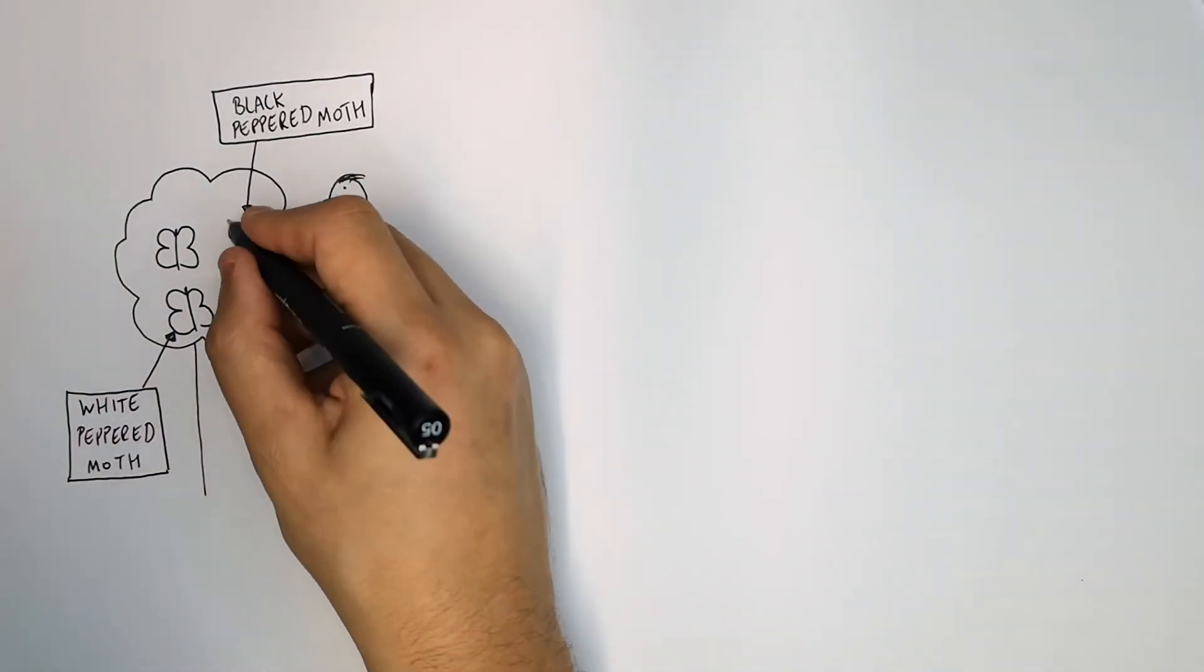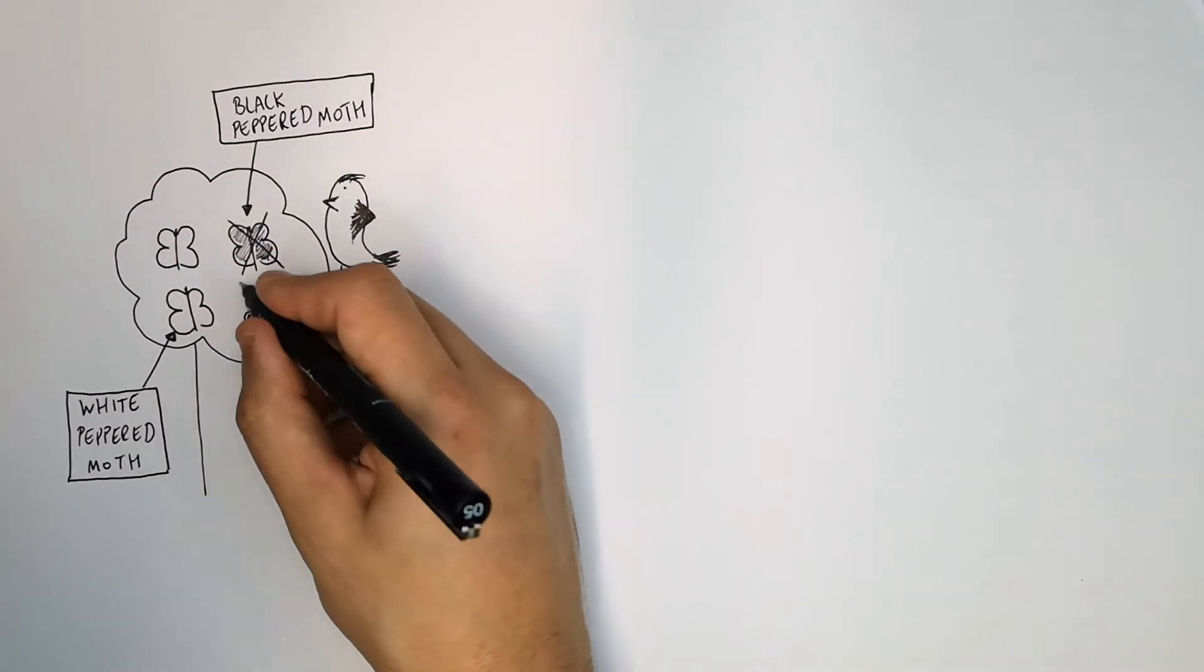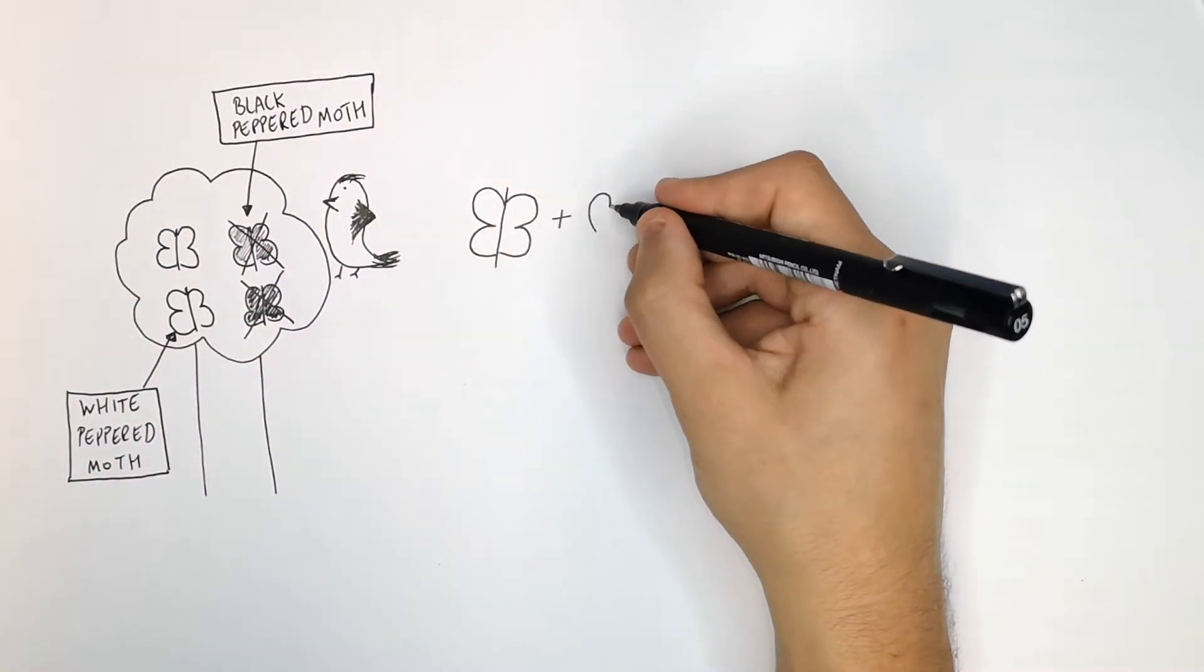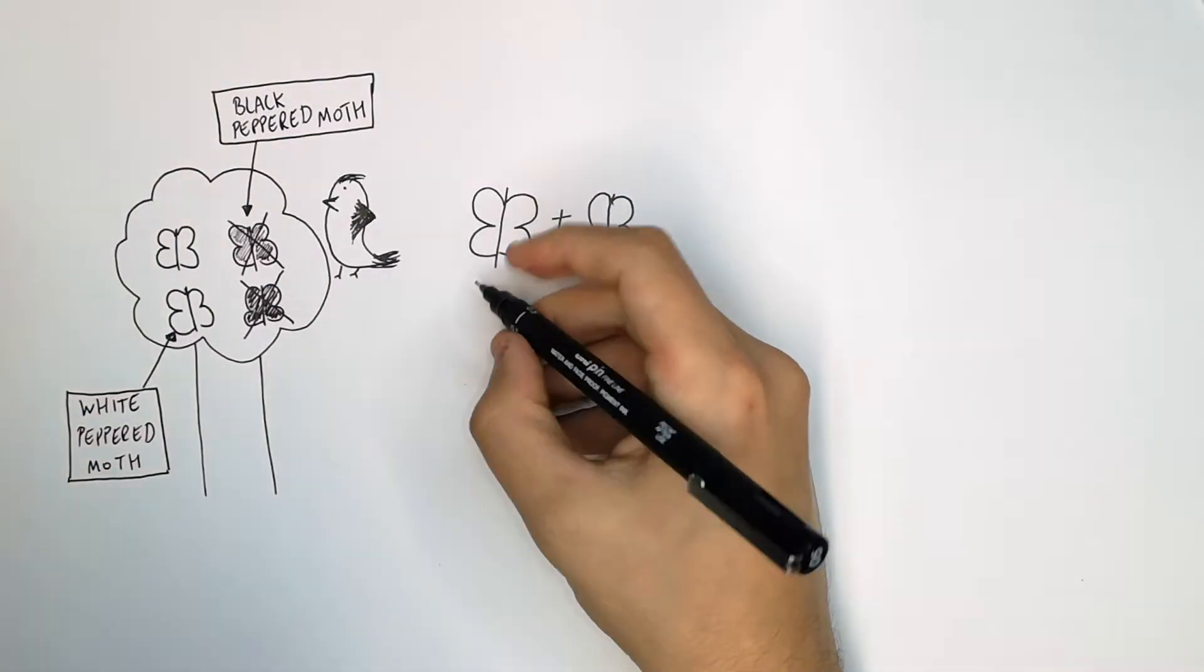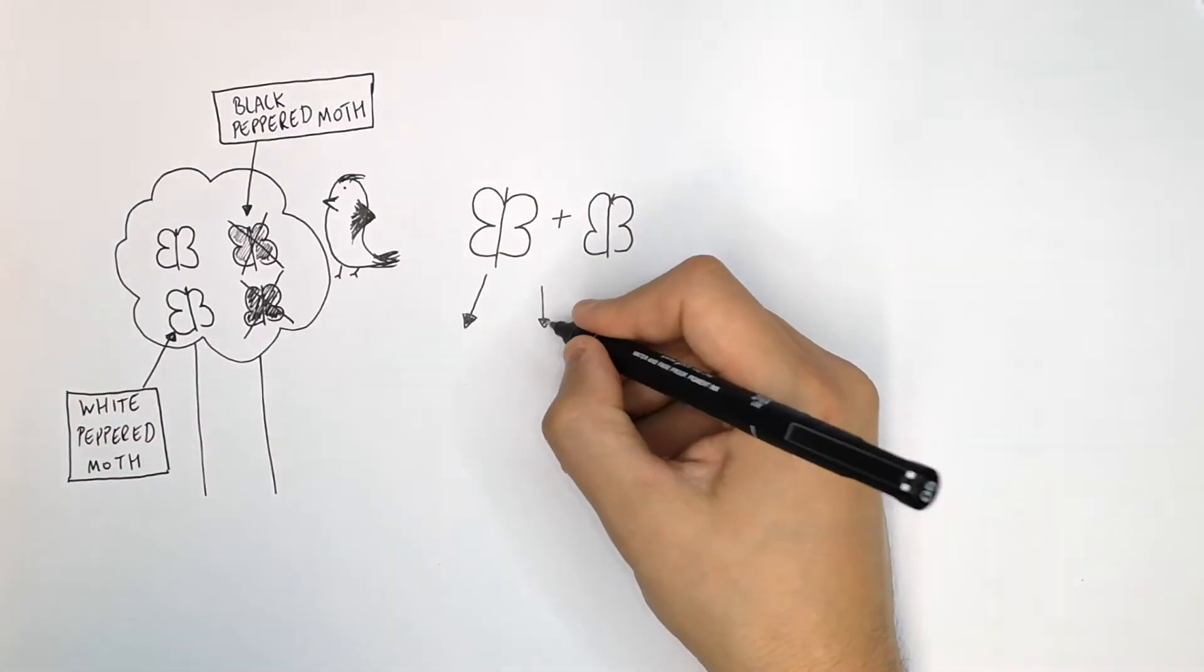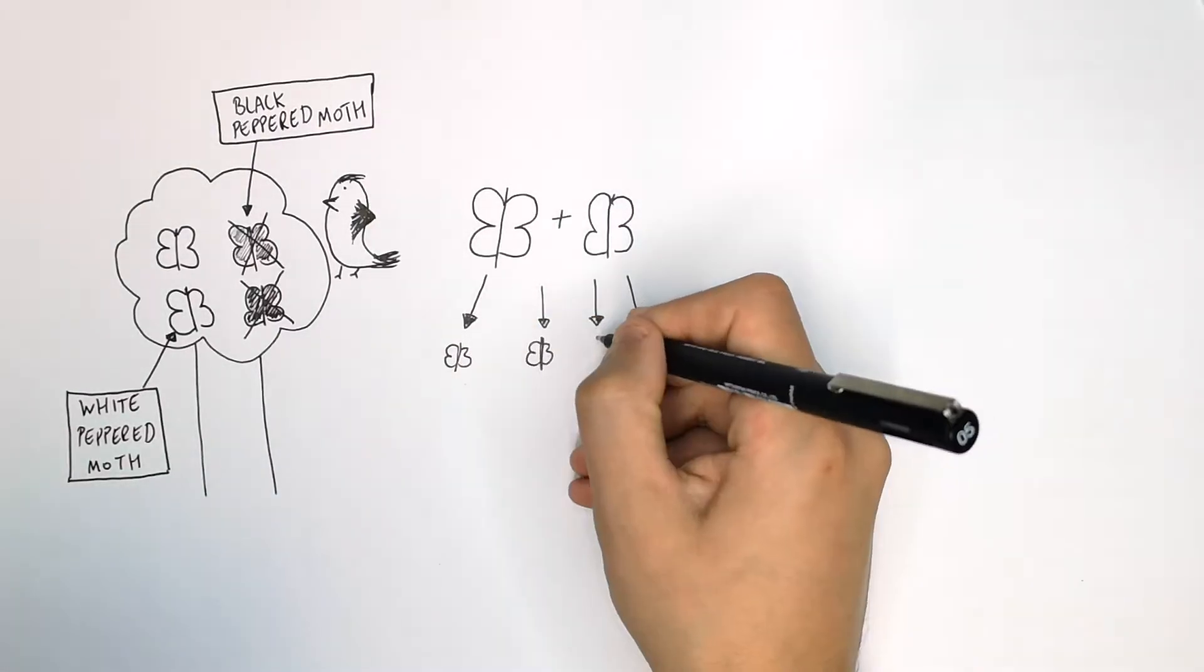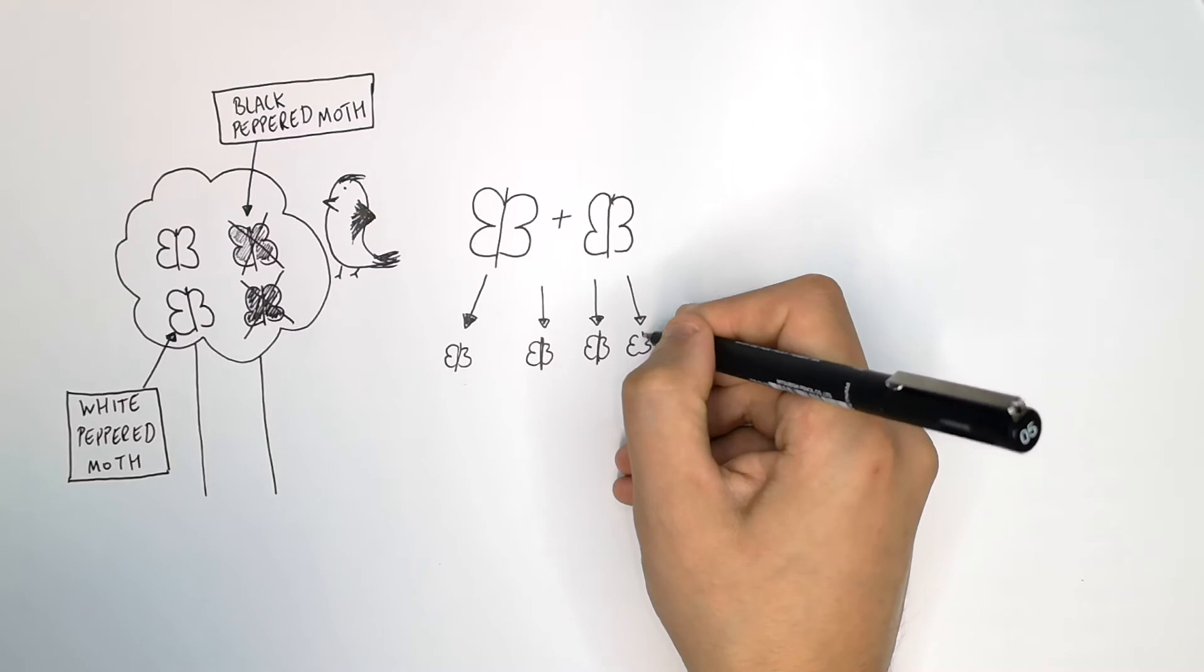This would lead to a reduction in number of the black peppered moths as the birds would eat those first, which would allow the white peppered moths to survive, breed and pass on their beneficial variation to their offspring. In this case, it is the colour white. So the offspring will have a bigger chance of surviving.